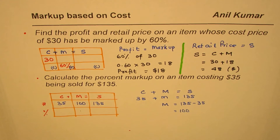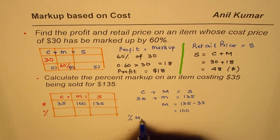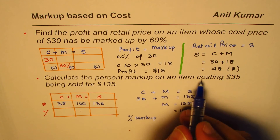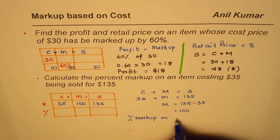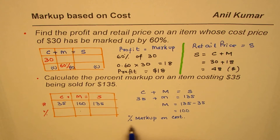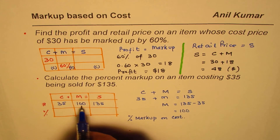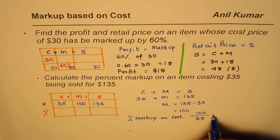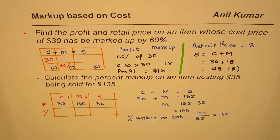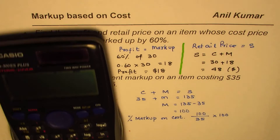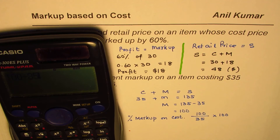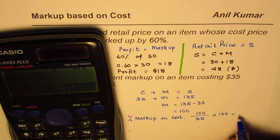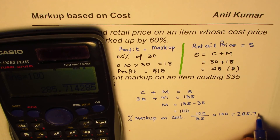We need to find the percent markup. Percent markup on an item is by default on cost price. Markup is $100, so: percent markup equals markup divided by cost price, times 100 — that is $100 divided by $35 times 100, which equals approximately 285.71%.